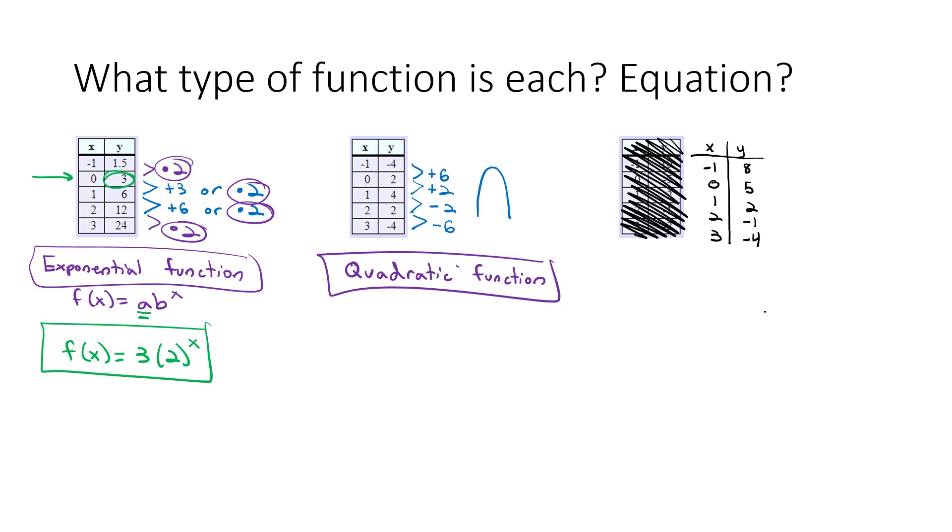So we've got negative one, eight, zero, five, one, two, two, negative one, and three, negative four. We're going to attempt to figure out how these are changing. Well, from eight to five, it looks like we subtracted three. We might have multiplied by some fraction, but let's see what happens with the next. To go from five to two, we have to subtract three again. And then from two to negative one, we subtract three again. And then from negative one to four, we subtract three again.